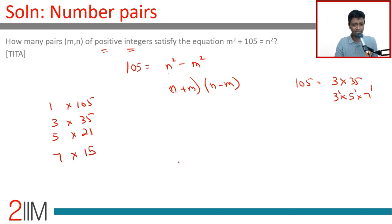7 into 15. Each of those will give us one pair of integers. Remember, n + m has to be greater than n - m. n and m are natural numbers, n is greater than m, this has to be greater than this. So we need to worry about only 105 into 1, we don't have to worry about 1